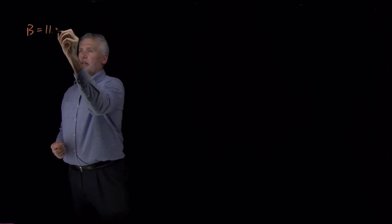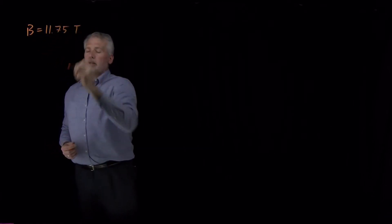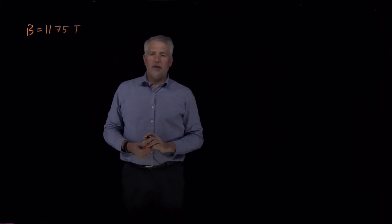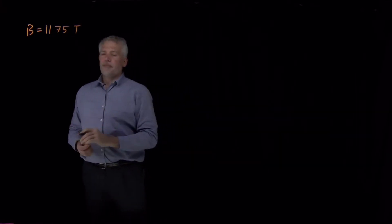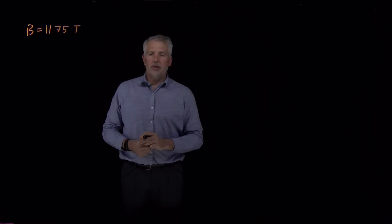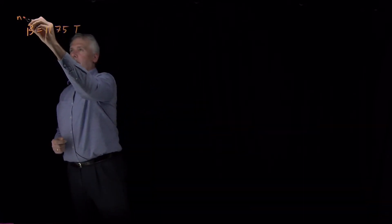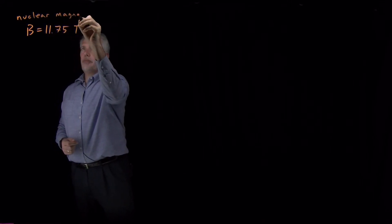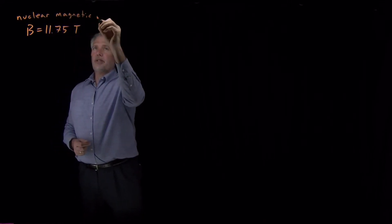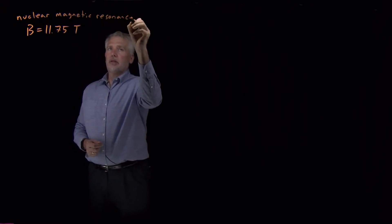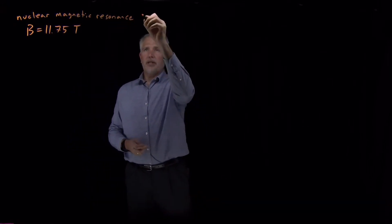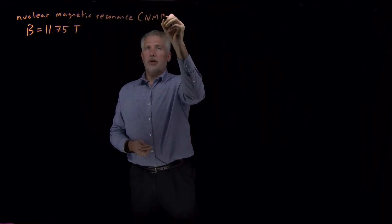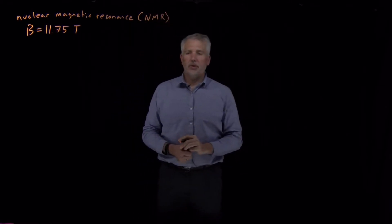So let's say we have a magnet with a strength of 11.75 Tesla. If we build an instrument in a chemical laboratory with this large magnet in it, it may be an instrument you've heard of or used before — this is called a nuclear magnetic resonance spectrometer. Nuclear magnetic resonance, or NMR, is the technique we're talking about.